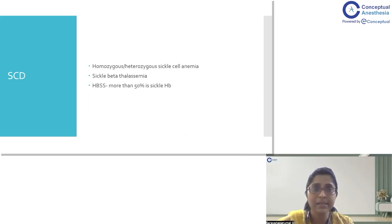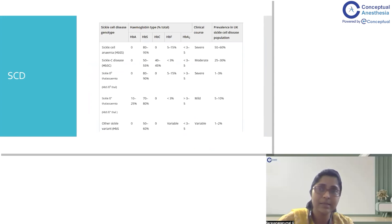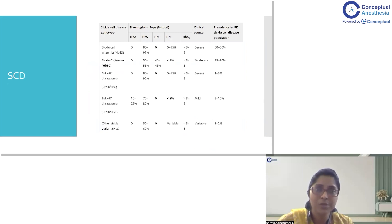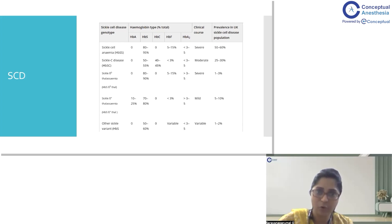Sickle cell disease can be homozygous or heterozygous. One form is sickle cell anemia and another is sickle cell beta-thalassemia. These variants differ depending on inheritance. In homozygous sickle cell anemia, HbS level is 80 to 95% and fetal hemoglobin is 5 to 15%. In sickle cell C disease, the HbS percentage is 50 to 55% and HbC percentage is 40 to 45%.